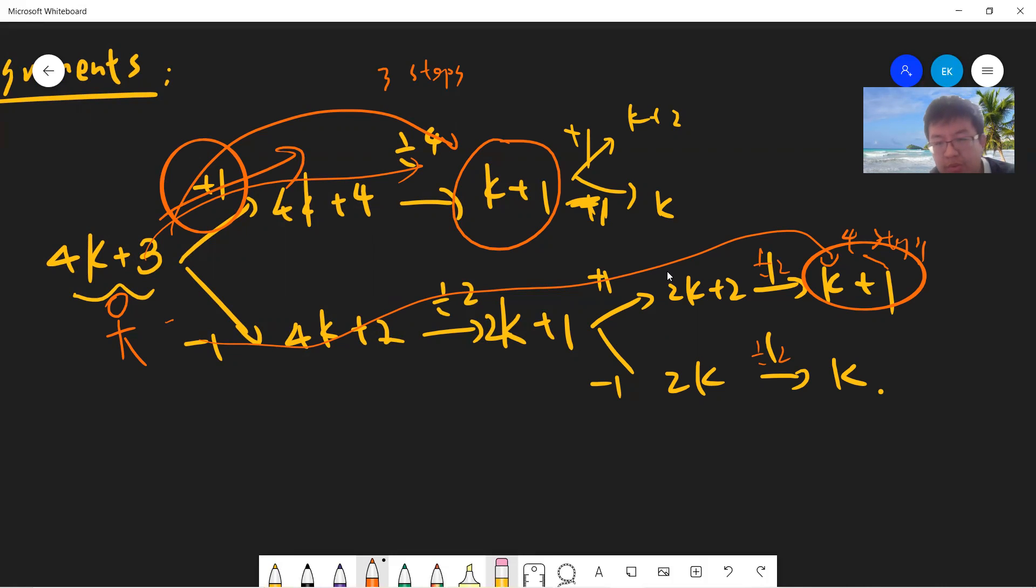And this guy takes one, two, three, four, takes four steps. And the second is that those are the same. Suppose you want to arrive k, then for this one.